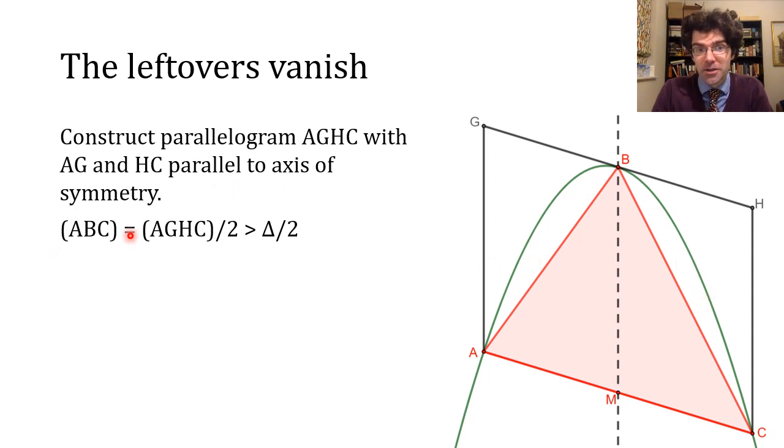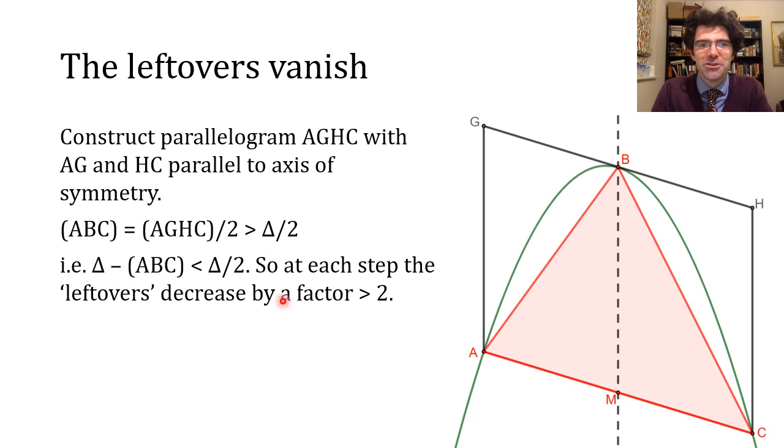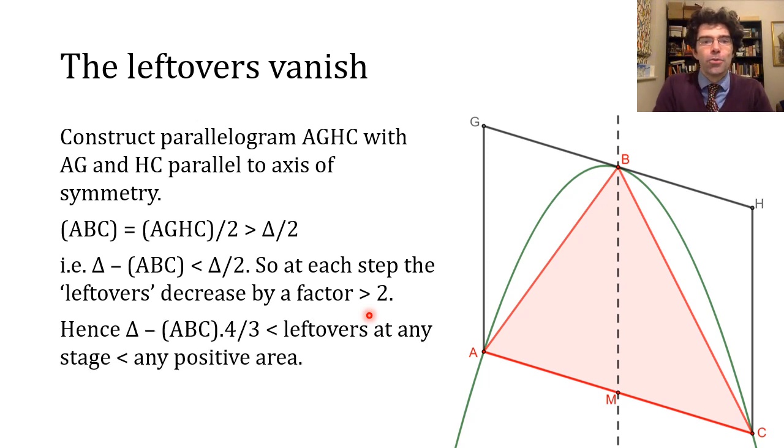We have that the associate triangle is more than half the area of its segment. That means the leftovers at each stage of the iterative process decrease by a factor of more than two. If they start at one unit, they'll end up in a series less than one, a half, a quarter, an eighth, and so on. That series will eventually, within finite time, go below any positive number you could care to mention. So we get the final piece of our jigsaw puzzle: the difference between delta and four-thirds of the area of the associate triangle is less than delta minus any of those polygons formed using associate triangles. It's less than some leftovers at any particular stage, and we showed that the total area of the leftovers will decrease below any positive area you could mention.